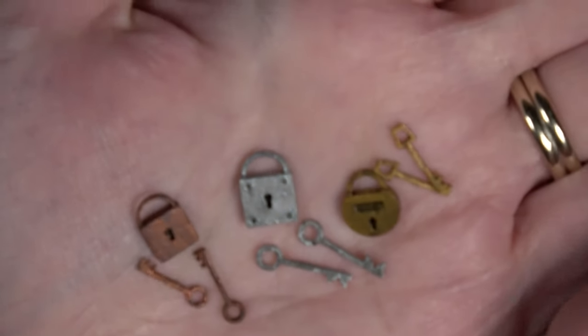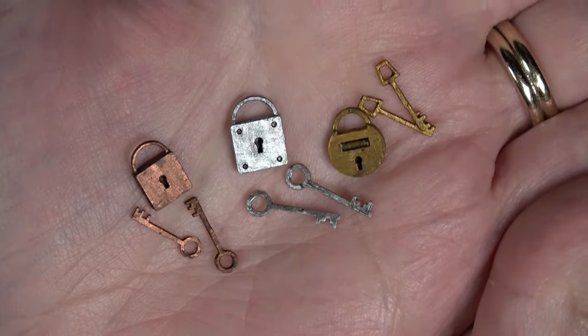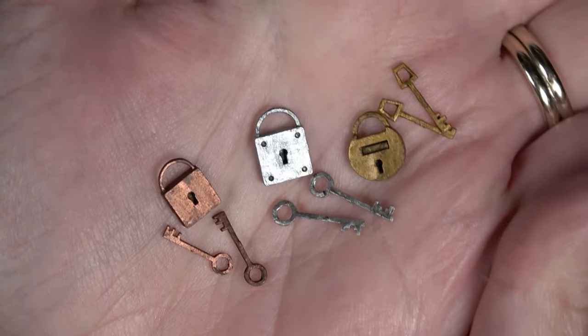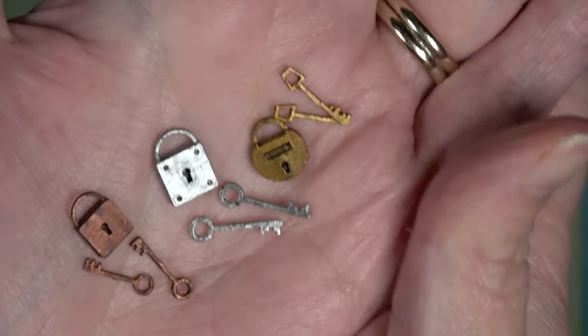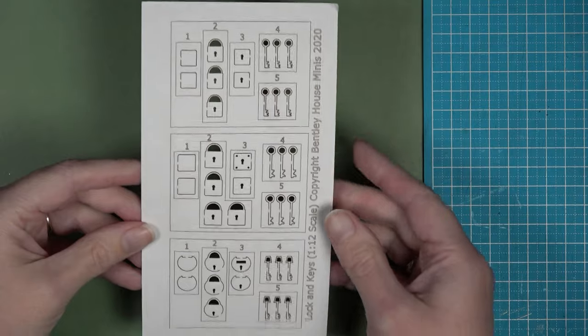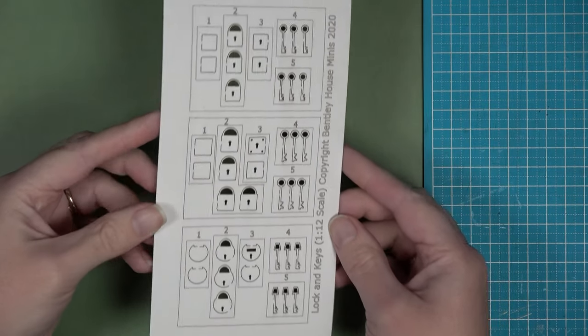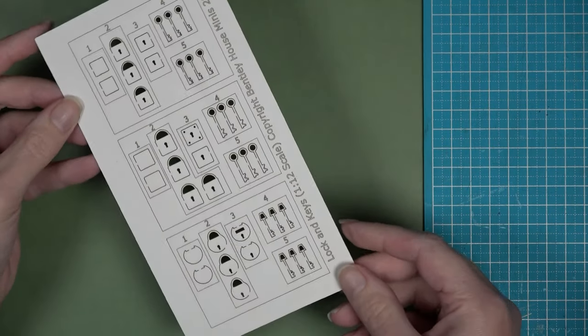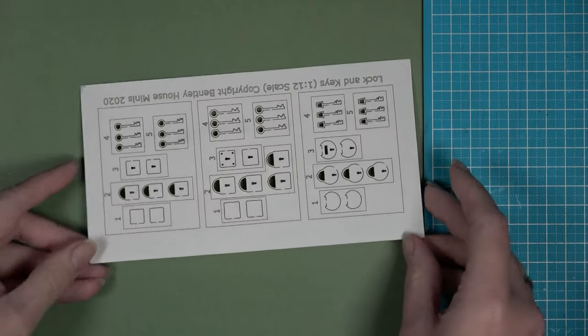Hello everyone! If you're watching this video, it's most likely that you have either purchased or are thinking about purchasing the locks and keys kits from Bentley House Minis. When you receive your kit, you will have one sheet of paper that looks like this, and it has three sets on it.